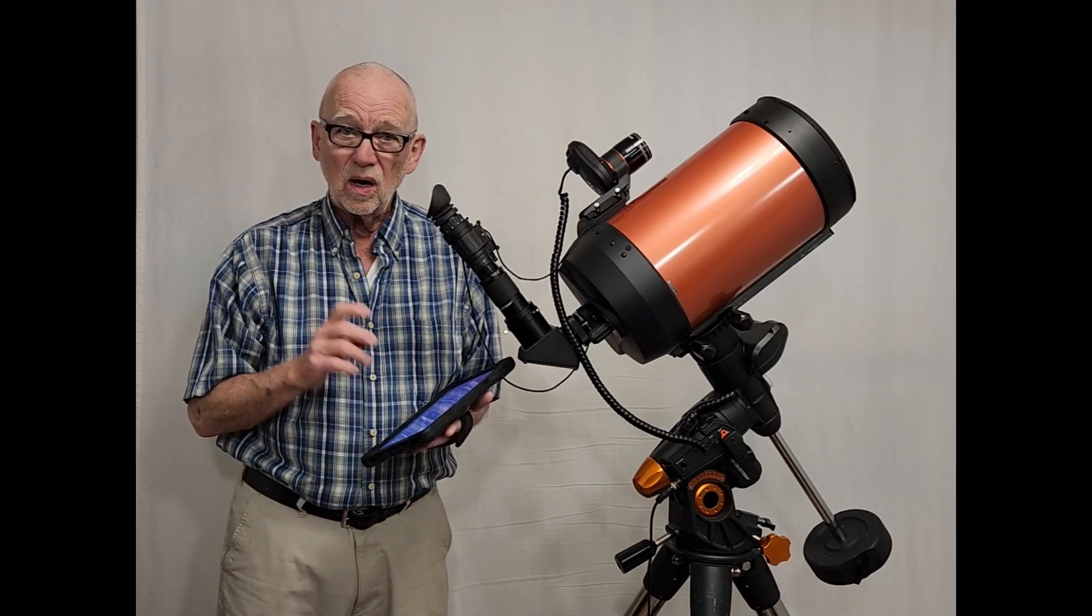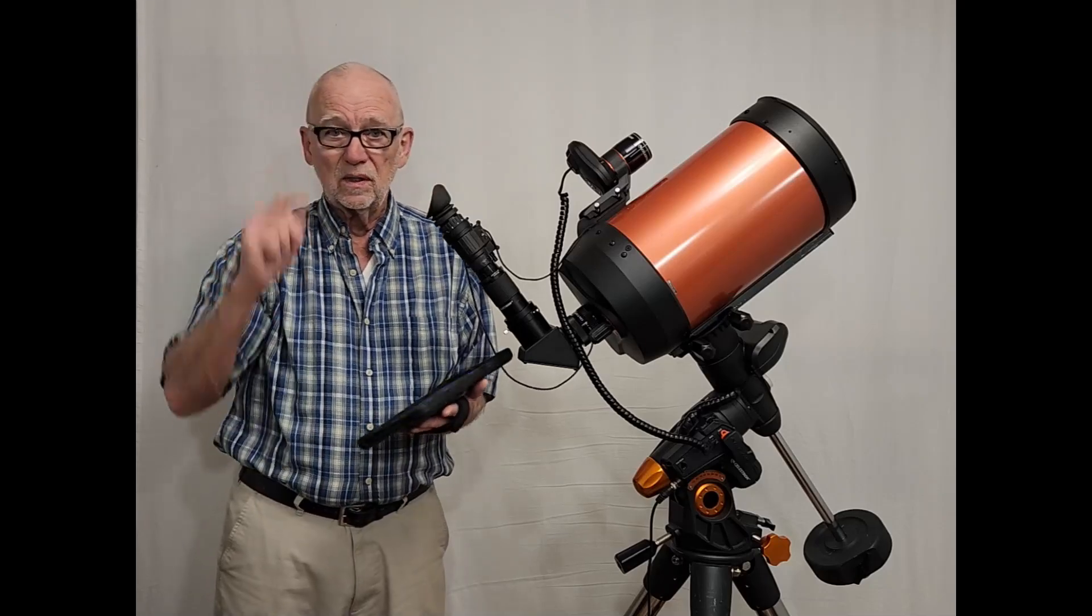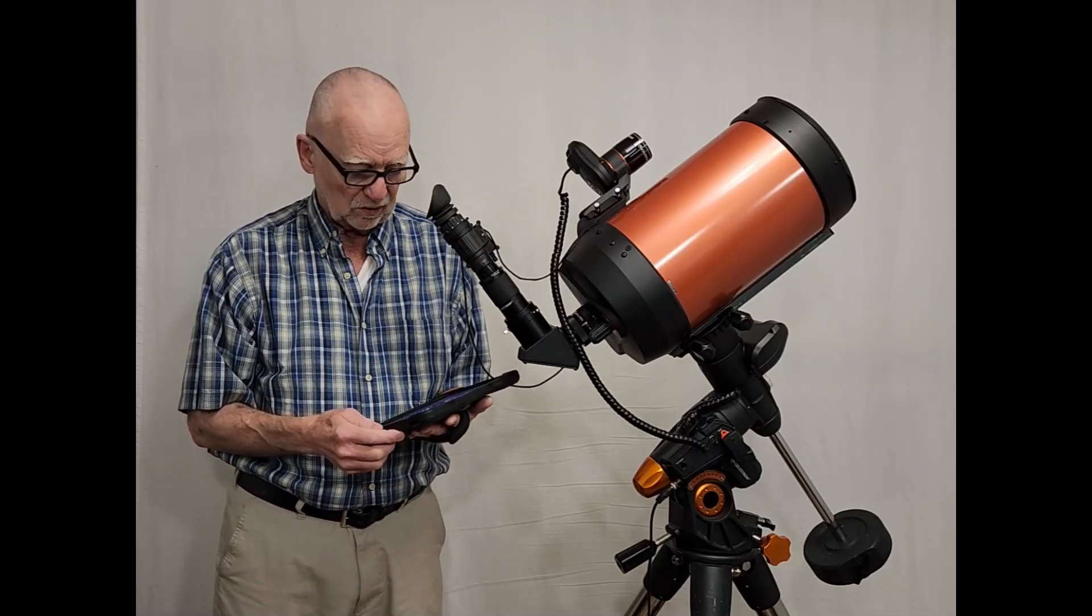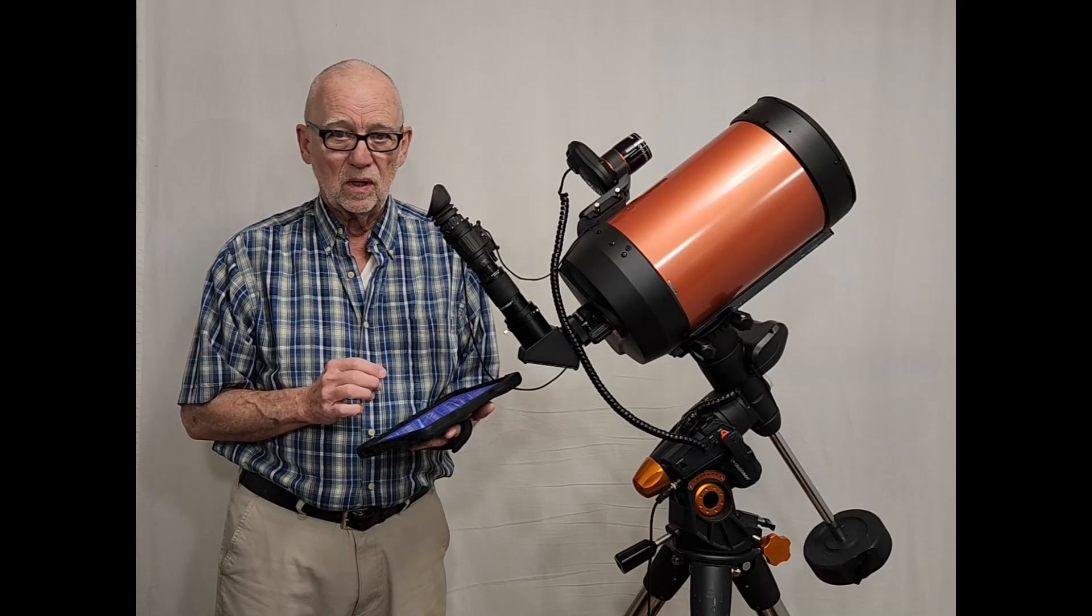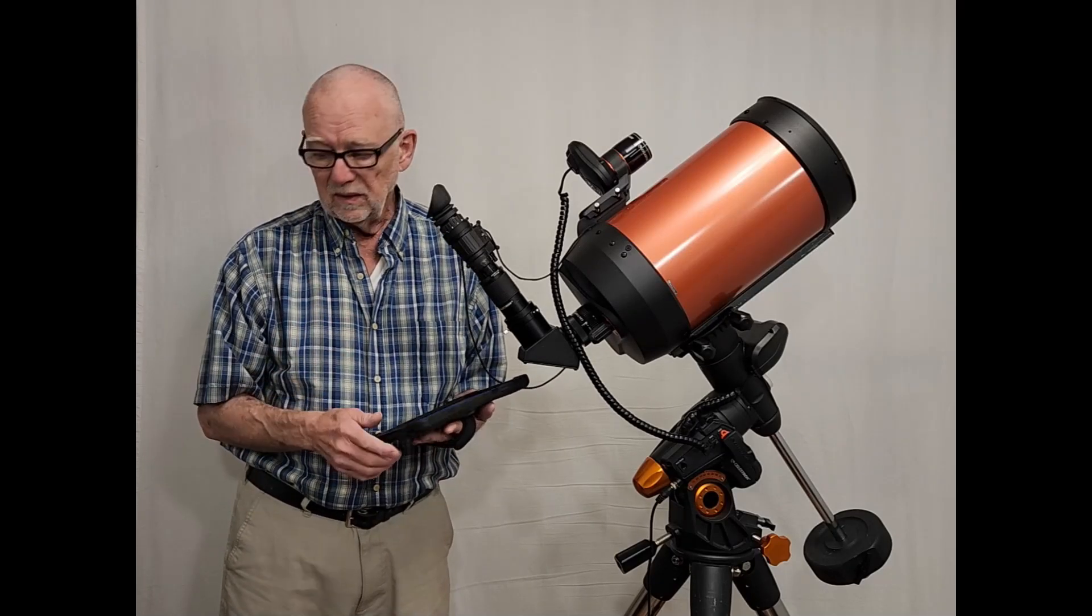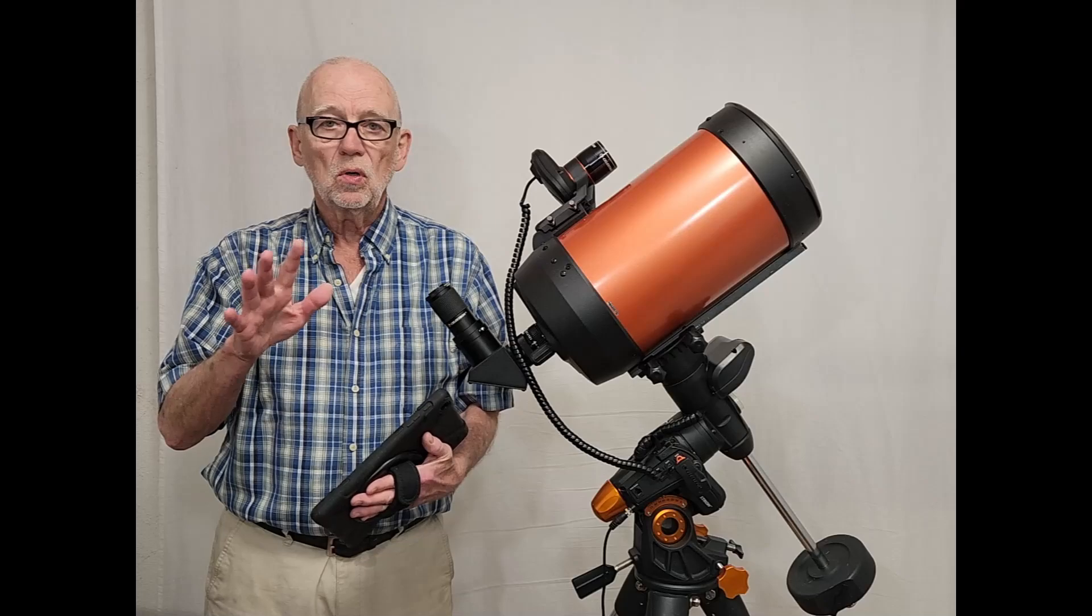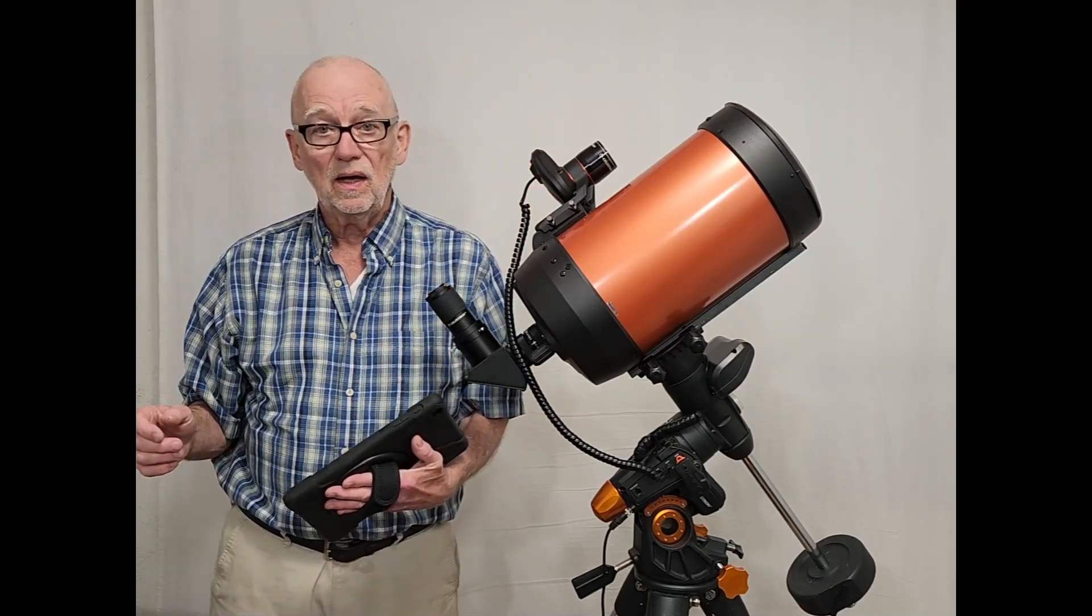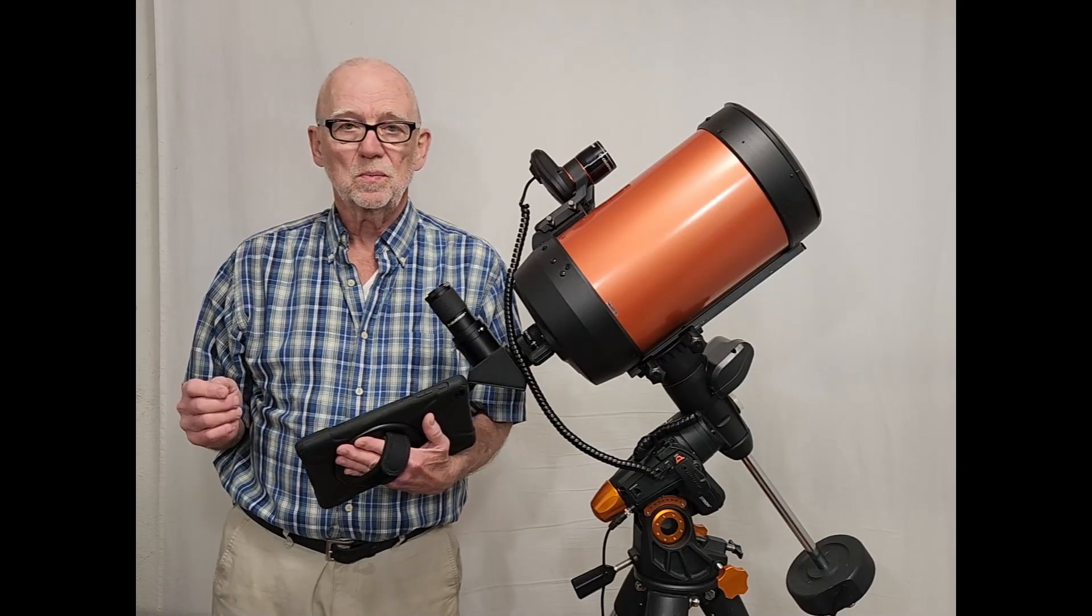Then I can use this to drive the telescope to point at different things. I've got essentially the whole universe here at my fingertips with the software. So I can use the software to find the object. I've got a whole video that shows this scope with the StarSense camera aligning itself to the night sky. I have a link in the description.